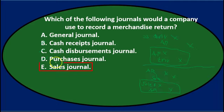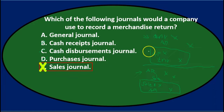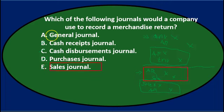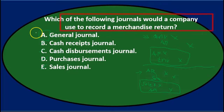E, the sales journal, records the original sale, but if a customer is returning inventory to us, it goes the wrong direction and doesn't fit that journal either. Whether we are the purchaser or the seller, a merchandise return doesn't fit any normal special journal — so we use the default: the general journal. The answer is A, general journal.